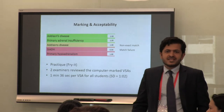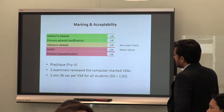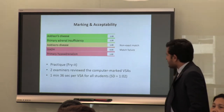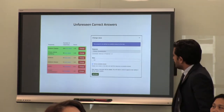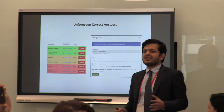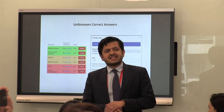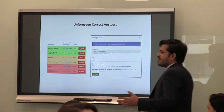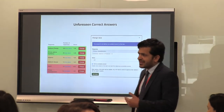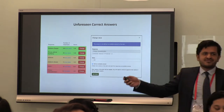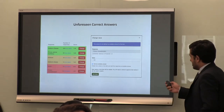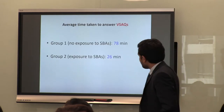The system uses machine learning to remember correct answers for next time — so if the answer is 'ultrasound of the left leg' and someone writes 'left leg ultrasound,' there are many variations of writing the same thing and the machine will remember them. Next time the same question is administered, marking becomes much quicker and more efficient. Two examiners reviewed the results and found the process pretty efficient to mark overall.